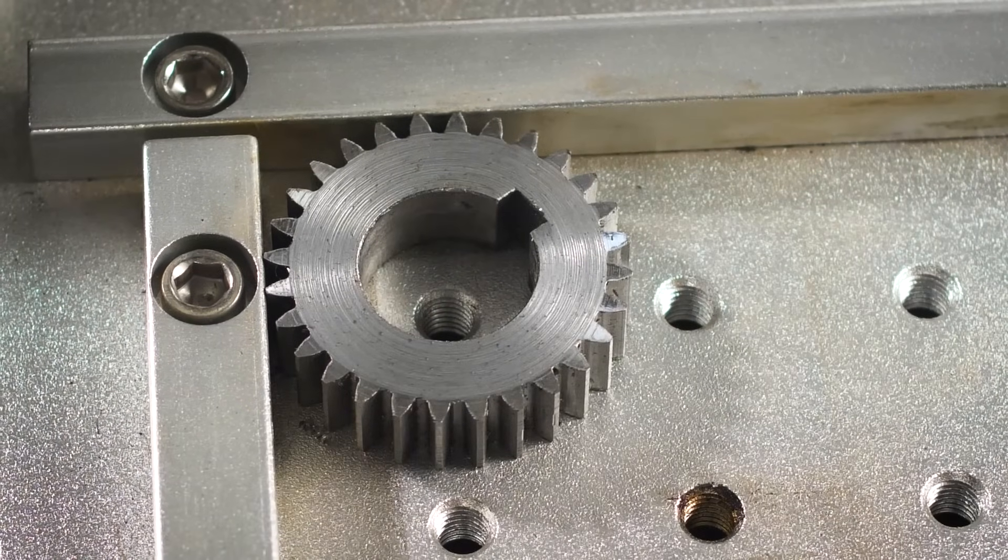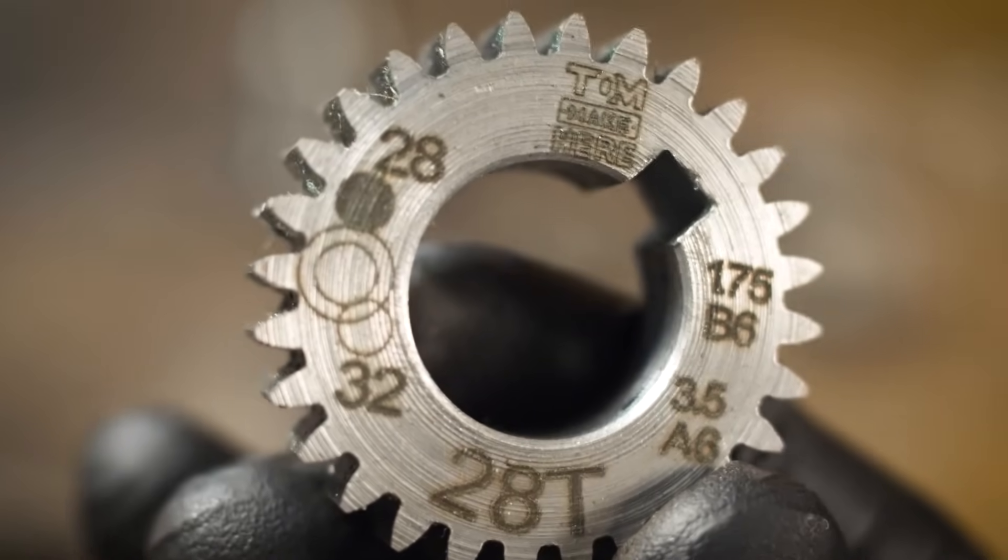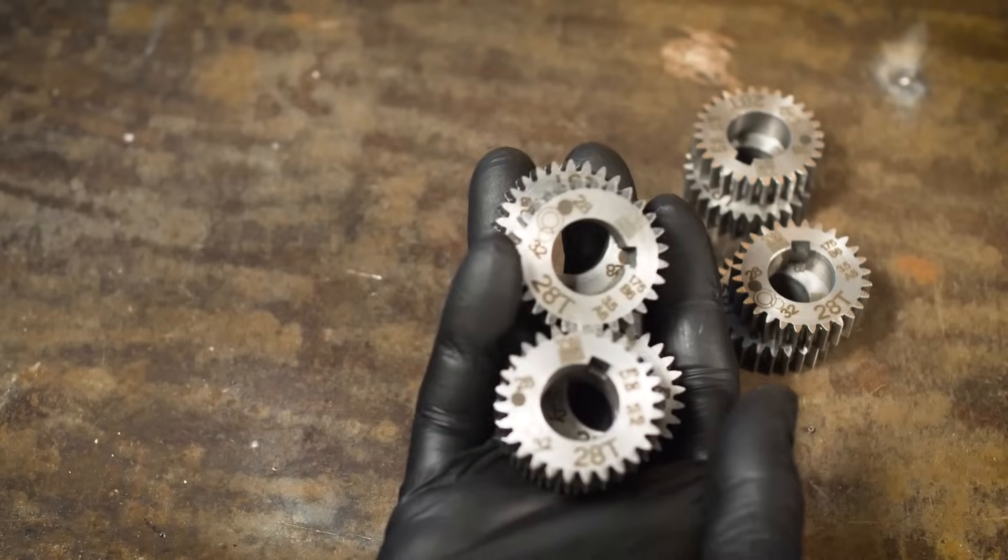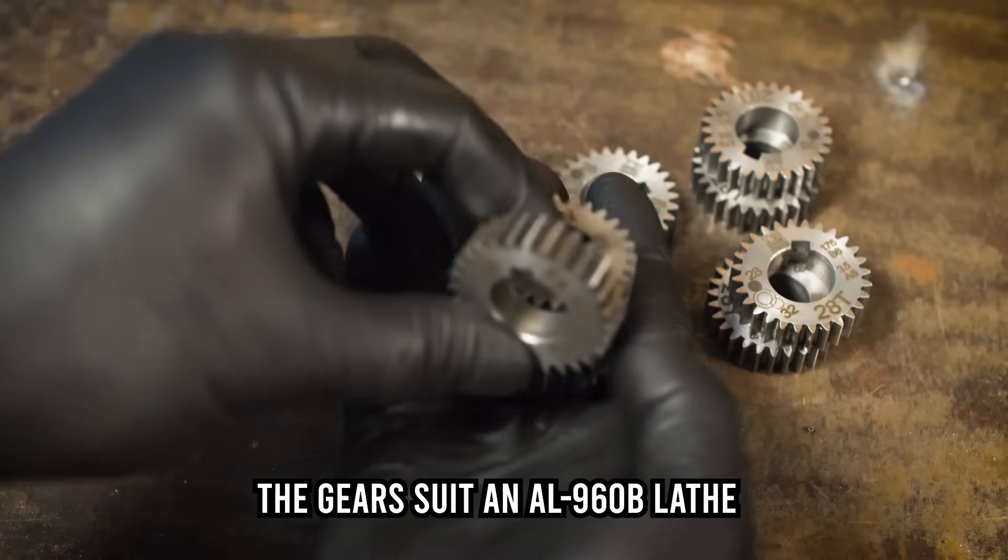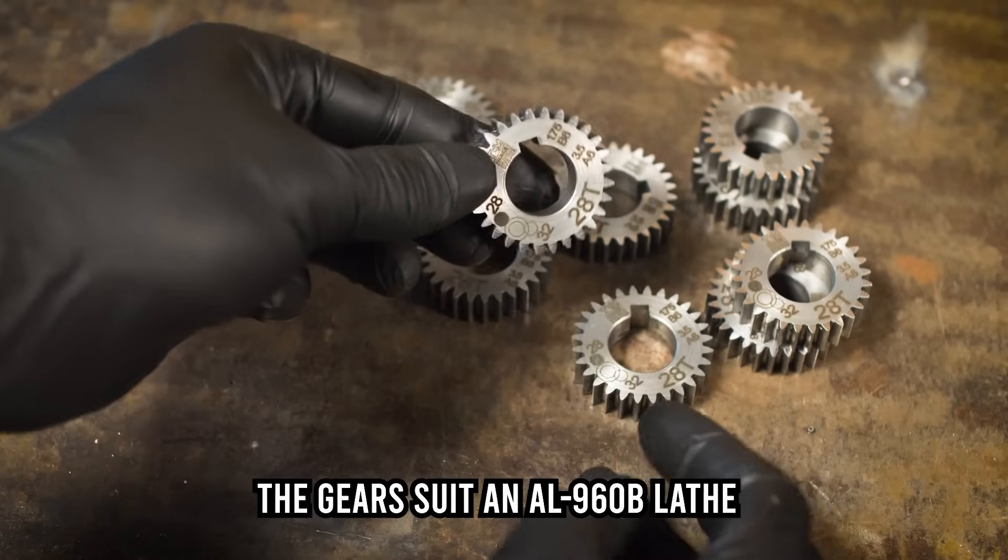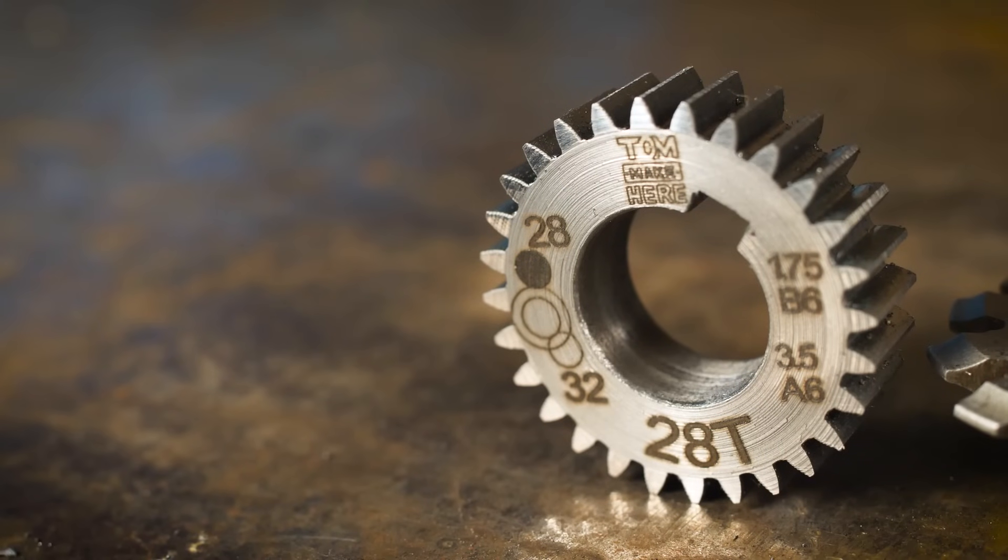I decided to add a finishing touch and laser engrave these gears. Inevitably I'll forget the gear selection. So I'm putting that on the gear itself. I'll put these up on Etsy if anyone wants them. They'll suit an AL960B lathe. We'll see if I can recoup my losses of my broken tooling. And hopefully help some people out. Thanks for watching.